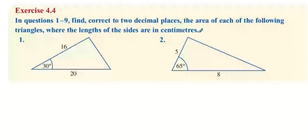I'm going to find correct to two decimal places the area of each of the following triangles where the lengths of the sides are given. Anytime you have a situation where you know two lengths and the angle in between, there's a rule we use. The area of a triangle is one half a b sine c.